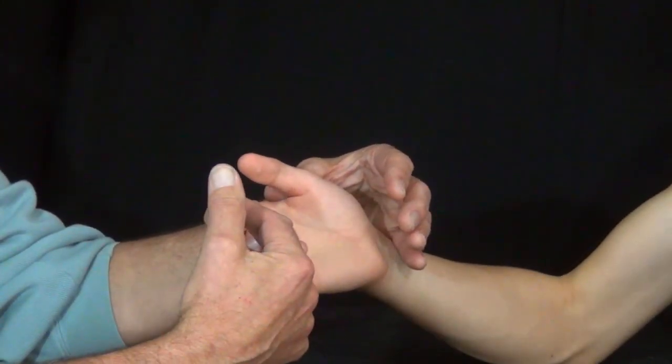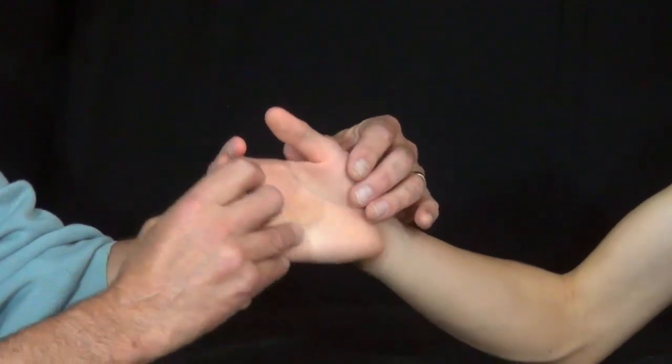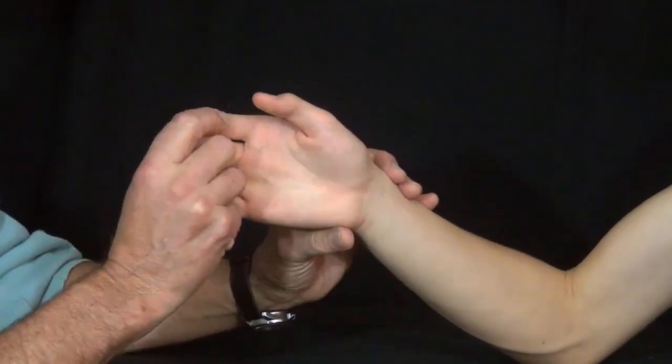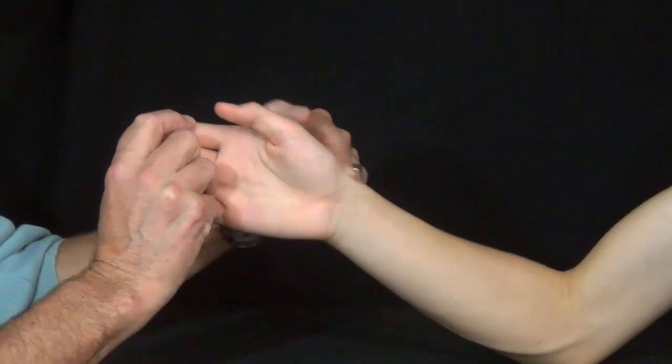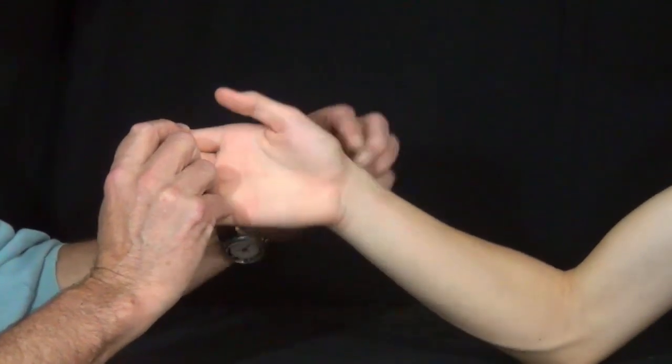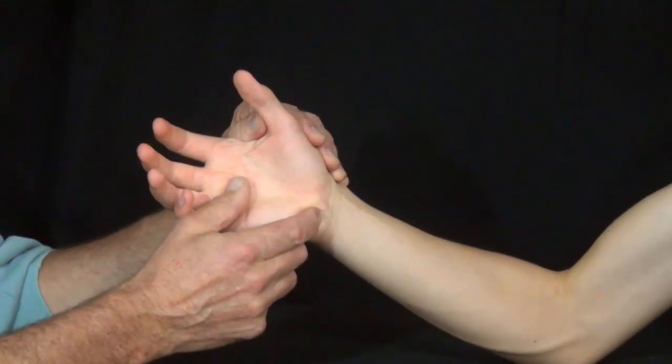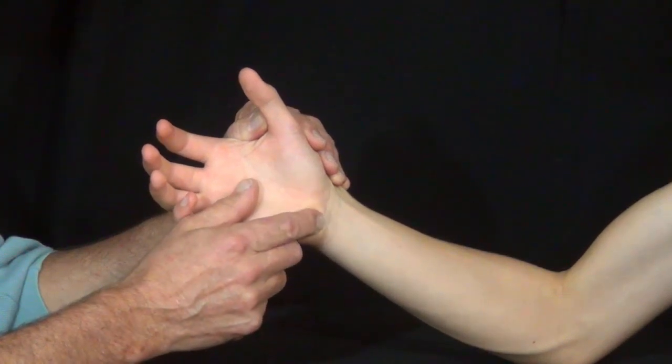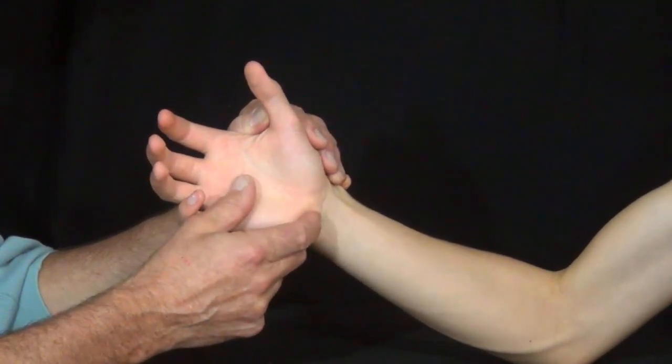Then, I'm going to palpate the bony landmarks. And the palpable bony landmarks consist of radial styloid, which is right here. The pisiform of bony prominence on the ulnar side of the wrist, down here.